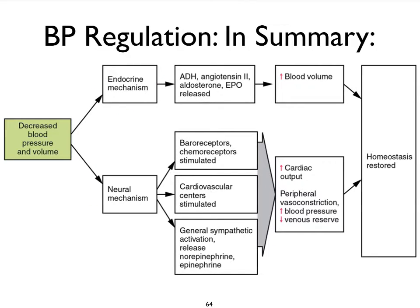We'll look at renal mechanisms on another slide. Within the endocrine mechanisms there are a variety of hormones that can either impact vasoconstriction to bring up peripheral resistance, or we can increase blood volume with hormones that retain fluid in the bloodstream such as ADH, and indirectly via angiotensin 2, aldosterone, and EPO. We can also depend on hormones that impact contractility of the heart, which affects cardiac output and therefore blood pressure.